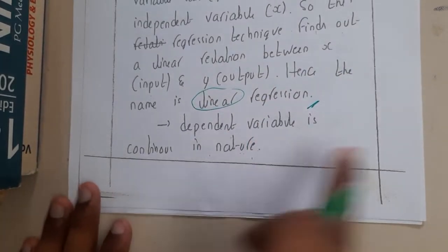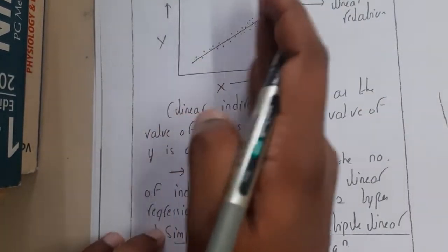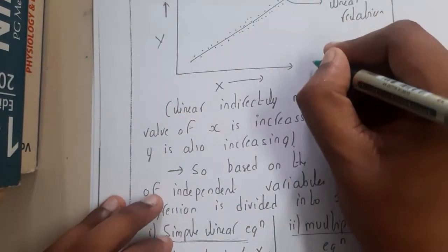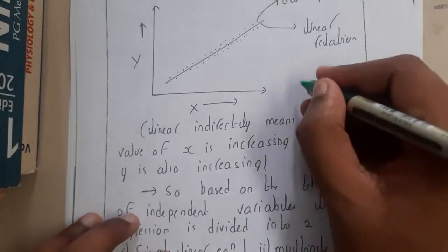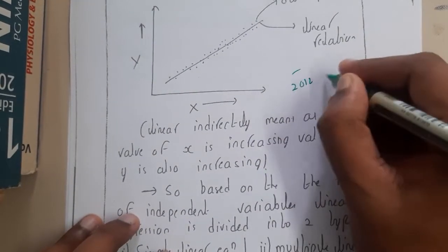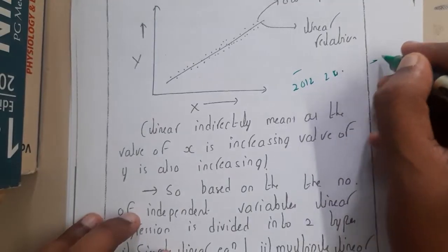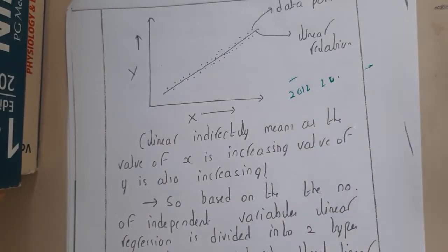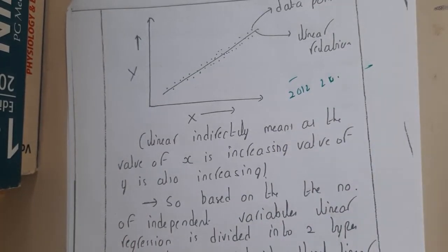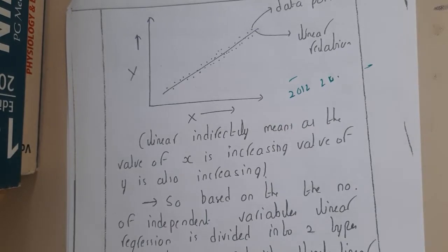The dependent variable is continuous in nature - it will be increasing in nature, in simple words. If we take years, you're calculating your company's turnover: in 2012 you got this much, in 2013 you got this much, so what is the expected value in 2014, 2015, 2016? That concept comes under linear regression.